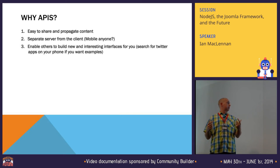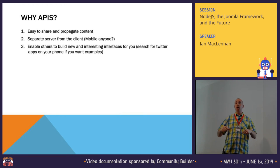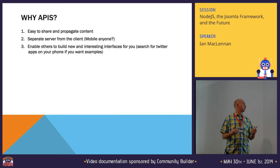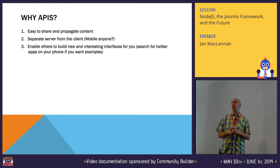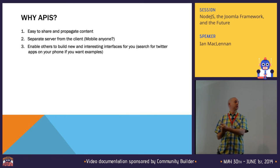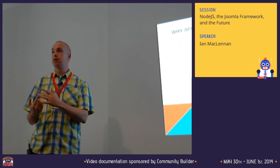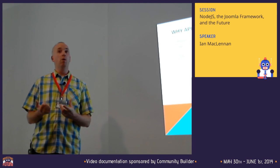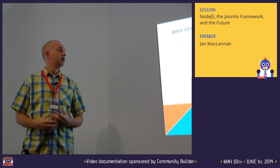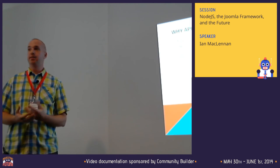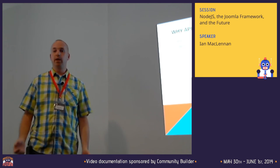APIs also allow you to separate the server from the client. If you think about your traditional Joomla site, you have a PHP application that generates a whole bunch of markup and returns it to your browser. If you pull that same markup up on a phone, sometimes it works well, sometimes it doesn't. APIs make mobile far, far easier. They also enable others to build new and interesting interfaces for you — you no longer have to tailor your application to every specific user. You publish an API and somebody else can interact with it differently. If you search for Twitter applications on your phone, you see scads of them — that's what APIs are enabling.